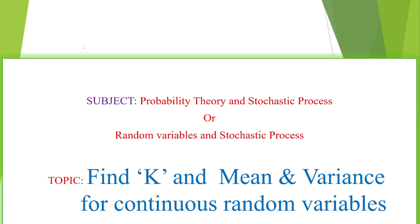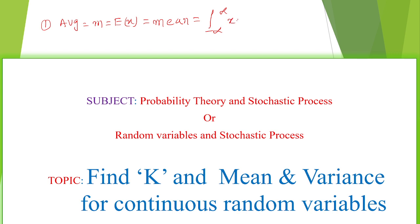I am going to explain about mean value and variance for continuous random variables. We know that the mean, also called the first average, expectation E of x, is equal to the integral from minus infinity to plus infinity of x multiplied with f of x dx.